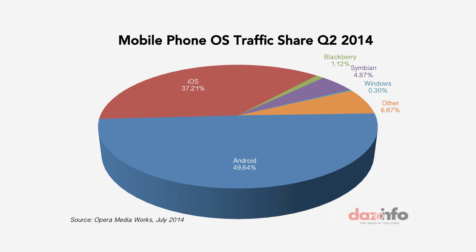Pie charts are problematic to begin with because it's very hard to compare the angular sizes of different wedges, whereas bar charts make height comparisons easy. There's no reason I've ever seen to draw pie charts in 3D. In a 3D pie chart, because of foreshortening, Android's slice — which has not quite 50% market share — corresponds to about 60% of the top-face pixels, and counting the lower face it leaps to 70%, making Android look dominant by violating the principle of proportional ink.